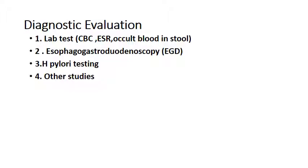Diagnostic evaluation for dyspepsia includes laboratory tests to exclude alarm signs: CBC to exclude anemia, which may be present with malignancy, and occult blood in the stool to exclude GI bleeding. Endoscopy and H. pylori testing should be performed — the preferred tests for H. pylori are stool antigen test and urea breath test. Other studies include abdominal ultrasound to evaluate for cholecystitis or gallstones, and abdominal CT to exclude chronic pancreatitis, pancreatic cystic lesions, or abdominal tumour.